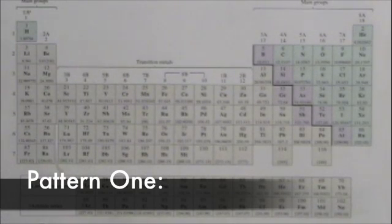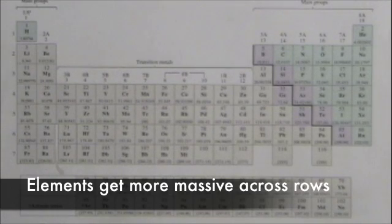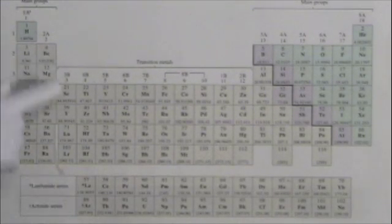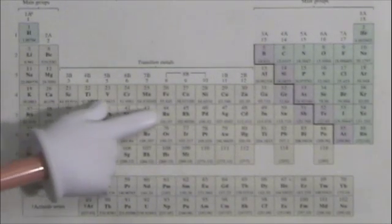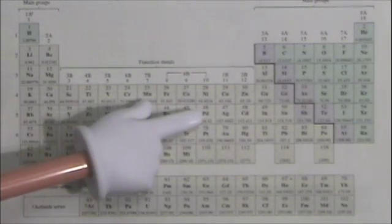So that's the first part of the pattern. As you go across rows, elements get more massive, because they have more subatomic particles, protons, neutrons, and electrons. Notably, each step to the right adds exactly one proton and exactly one electron.